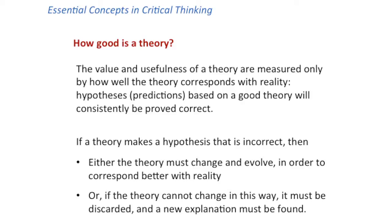By contrast, a theory that does not make any testable predictions — a theory that cannot be tested in this way — is no use at all, since it does not really help us explain anything. What do we do when the predictions from a theory turn out to be wrong? In that case, the theory is obviously incorrect in its present form because the explanation it is offering does not fit with the real world. Then we have two choices: the theory must either change and evolve so that it fits better with reality, or, if this is not possible, the theory must be abandoned and a new and better explanation has to be found.